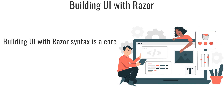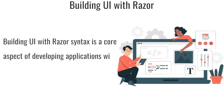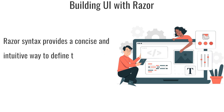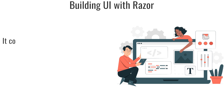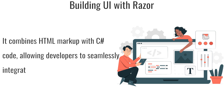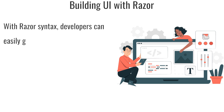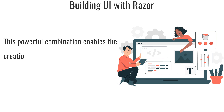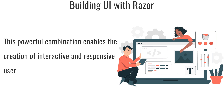Building UI with Razor Syntax: Razor Syntax is a core aspect of developing applications with frameworks like Blazor. It provides a concise and intuitive way to define the structure and layout of user interfaces. It combines HTML markup with C# code, allowing developers to seamlessly integrate server-side logic into the UI. With Razor Syntax, developers can easily generate dynamic content, render data from models, and execute conditional statements directly within the HTML markup. This powerful combination enables the creation of interactive and responsive user interfaces.